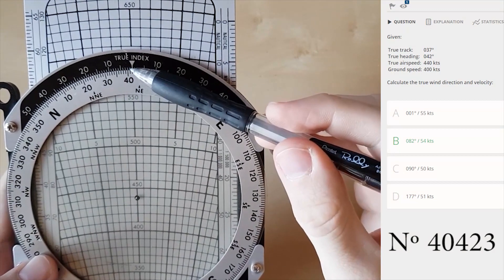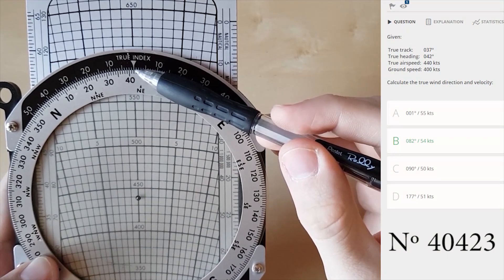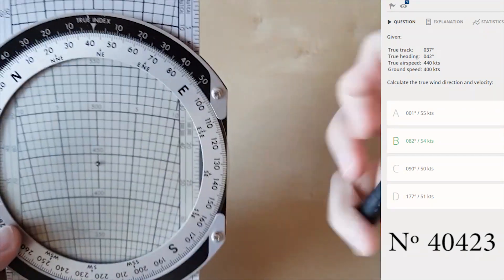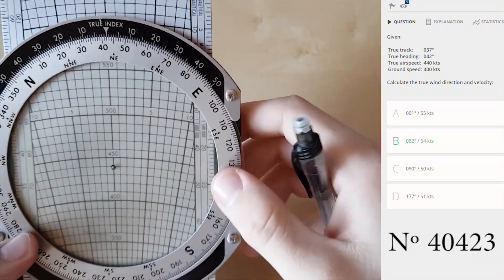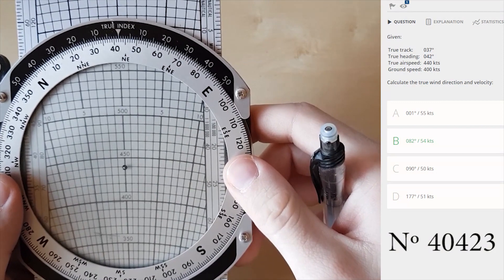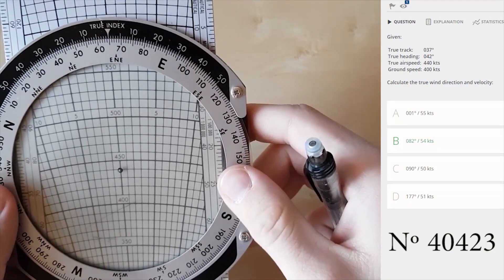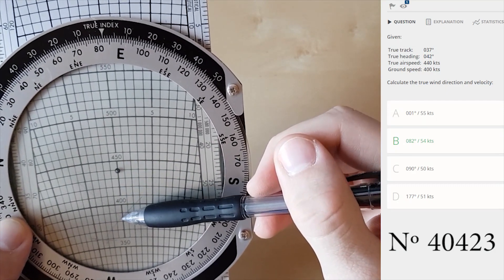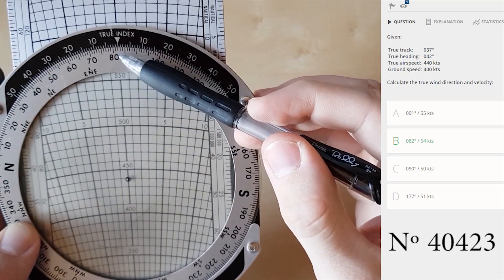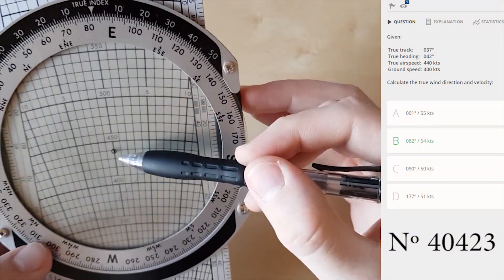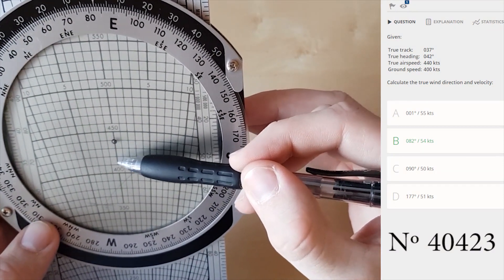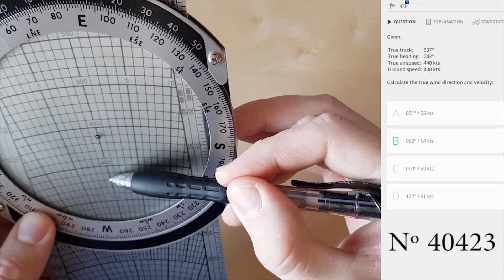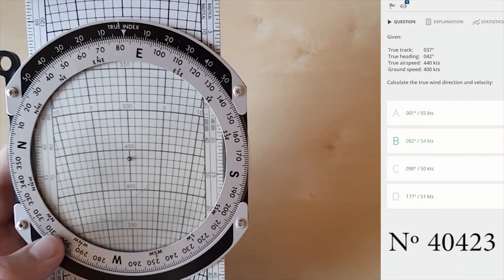Since under true index is my heading now, I can mark ground speed given by the question. I made two lines here and here. To find wind direction and velocity, I need to put the place where these two lines cross directly below true airspeed right here. This gives me my wind direction which is 82 and wind velocity which is 10, 20, 30, 40, 50, 55, 54 knots. And that's it.